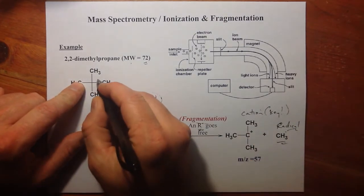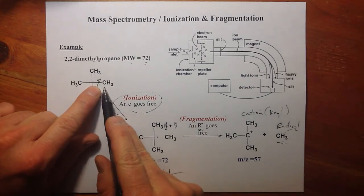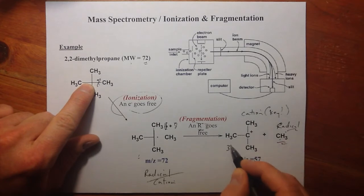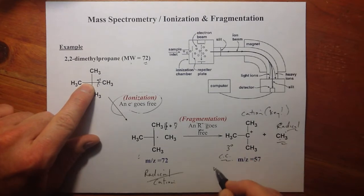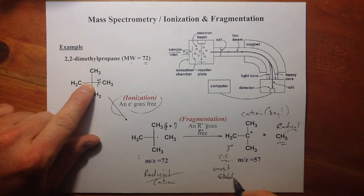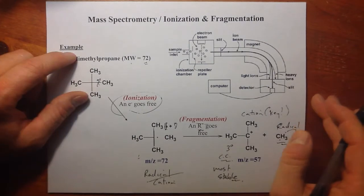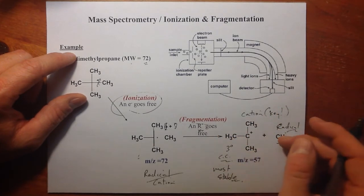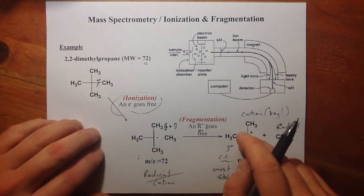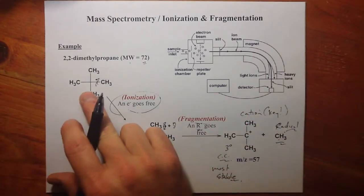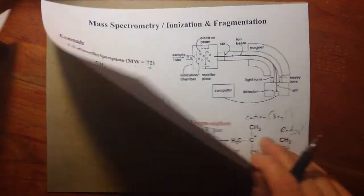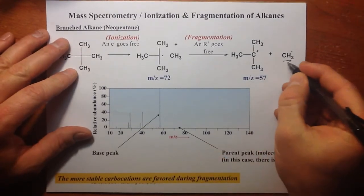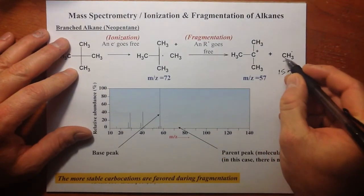Looking at the cation that would be most favored from this 2,2-dimethylpropane. The most favored cation would be formed if we severed off a methyl group with radical and left a positive charge on a tertiary carbon, because a tertiary carbocation is most stable of positive charges on carbons. And considering inductive effects, we'd like to have it tertiary instead of secondary or primary.